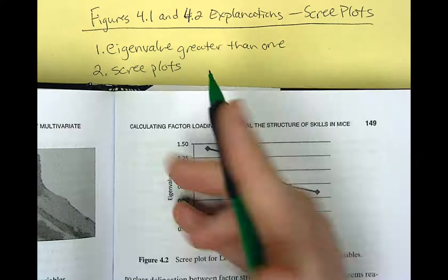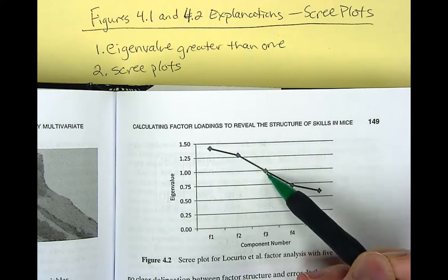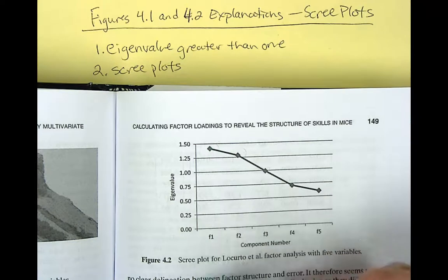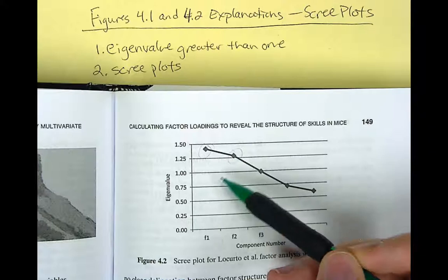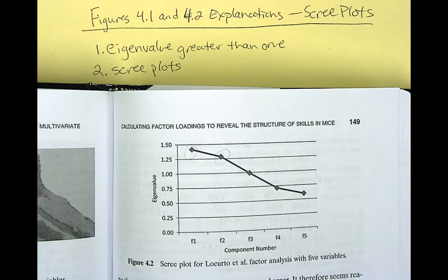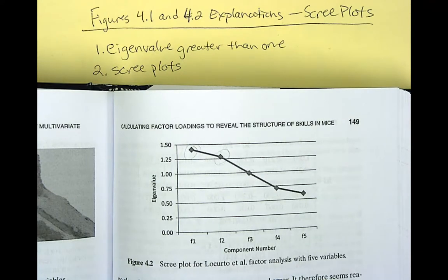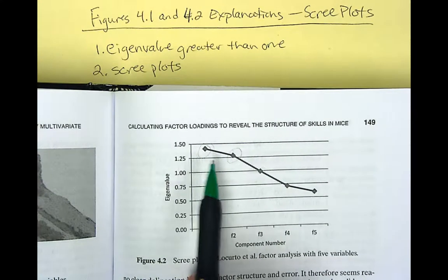But if it's like this one, we can do the eigenvalue greater than one criterion. And we see here factor three, it looks like it's just below one. So that's why we use two factors, factor one and factor two, which both are over 1.25. So I hope this explains why table 4.3 in the text on page 143 uses two factors instead of three or four. It's because of the eigenvalue greater than one criterion.